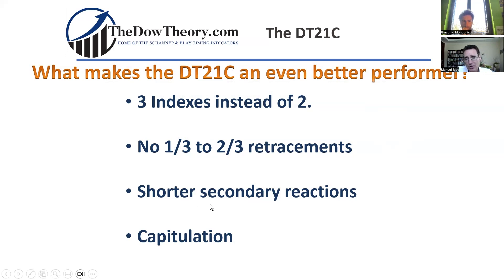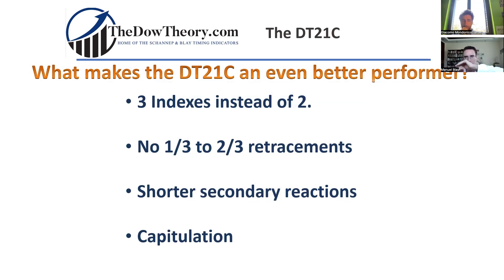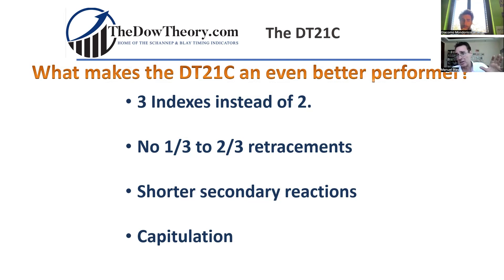Also, he uses a concept of shorter secondary reactions. The original DAO theory says that we need three weeks of a pullback or rally to declare the existence of a secondary reaction. Jack Shane says no — we just need eight trading days as an average of all the indexes. It works well. It is much more reactive, so you get in earlier and you get out earlier.